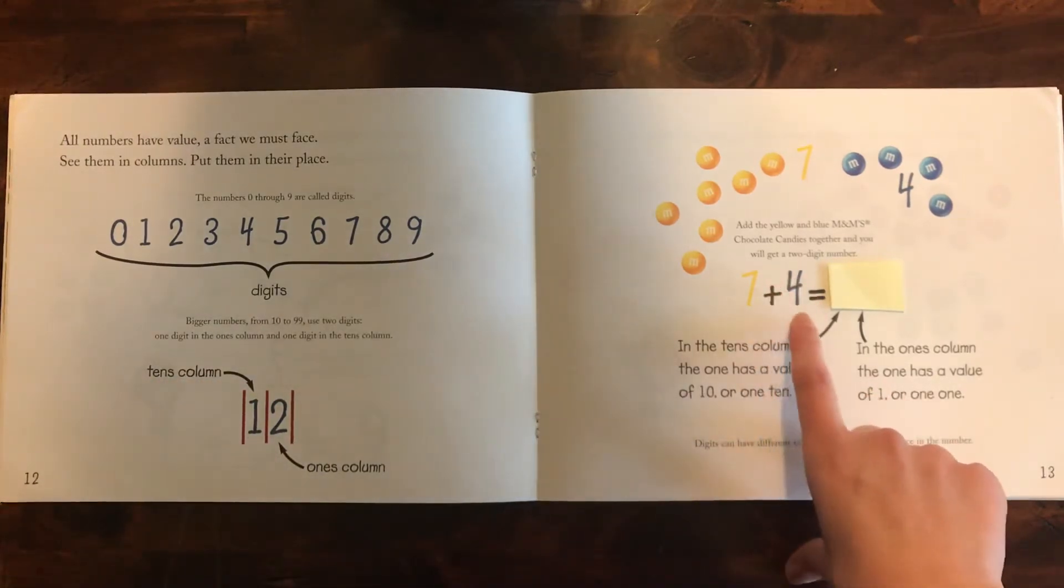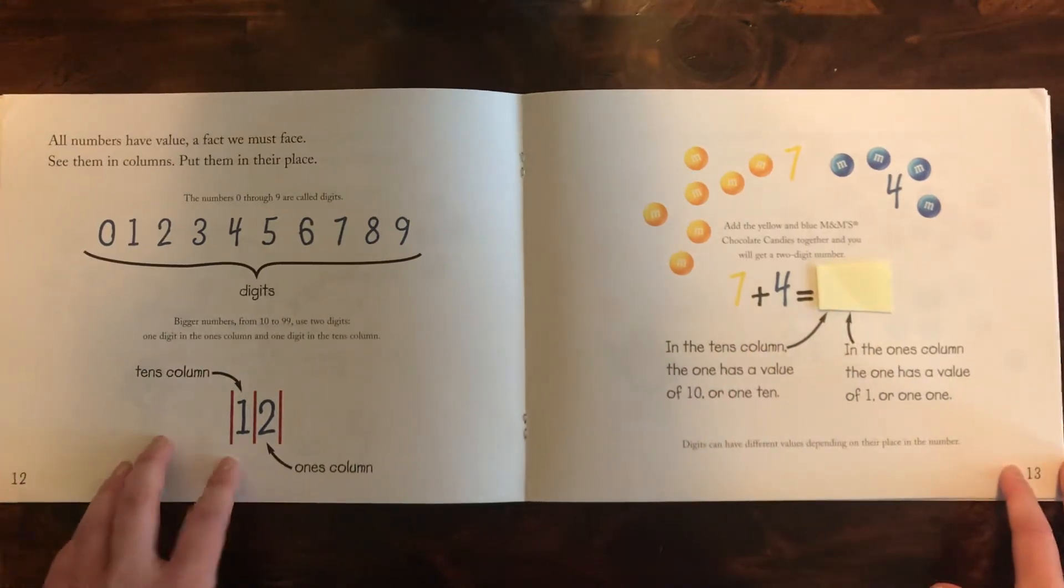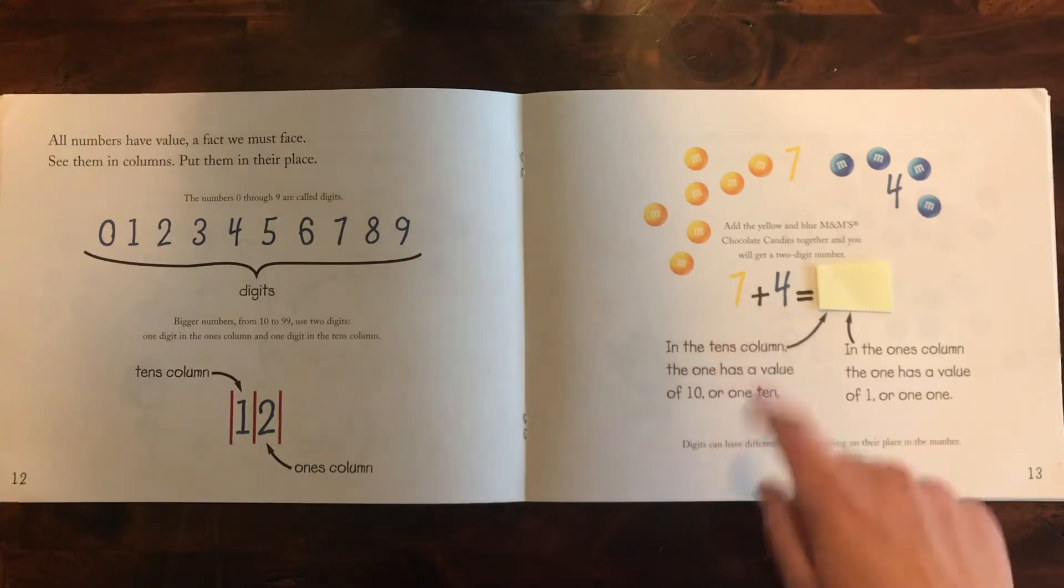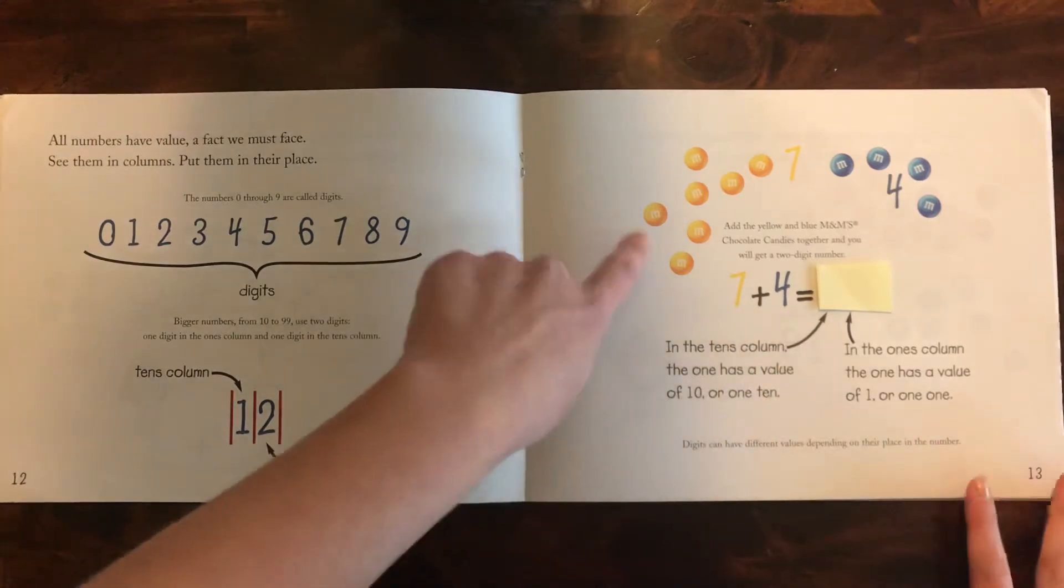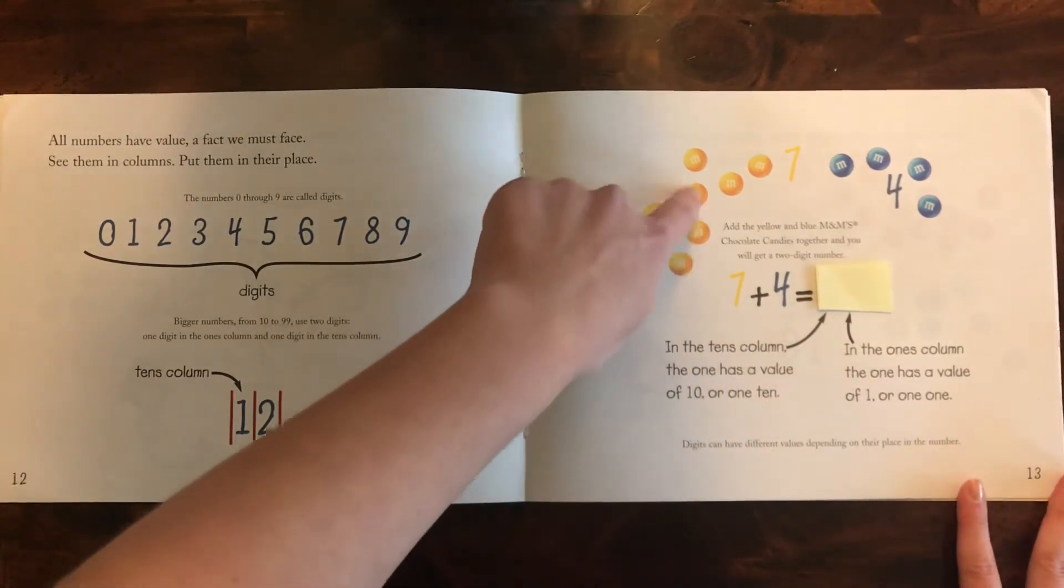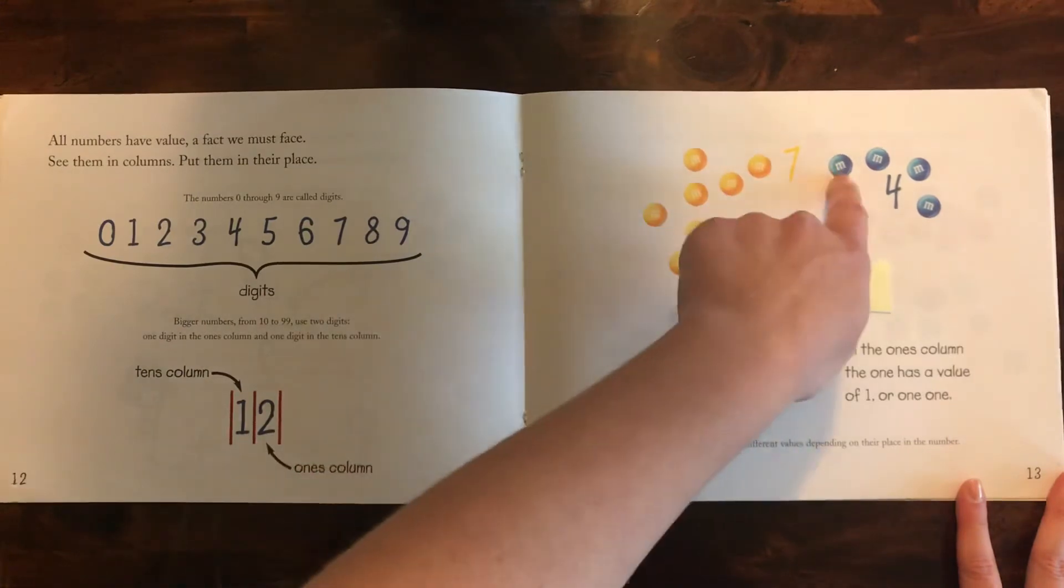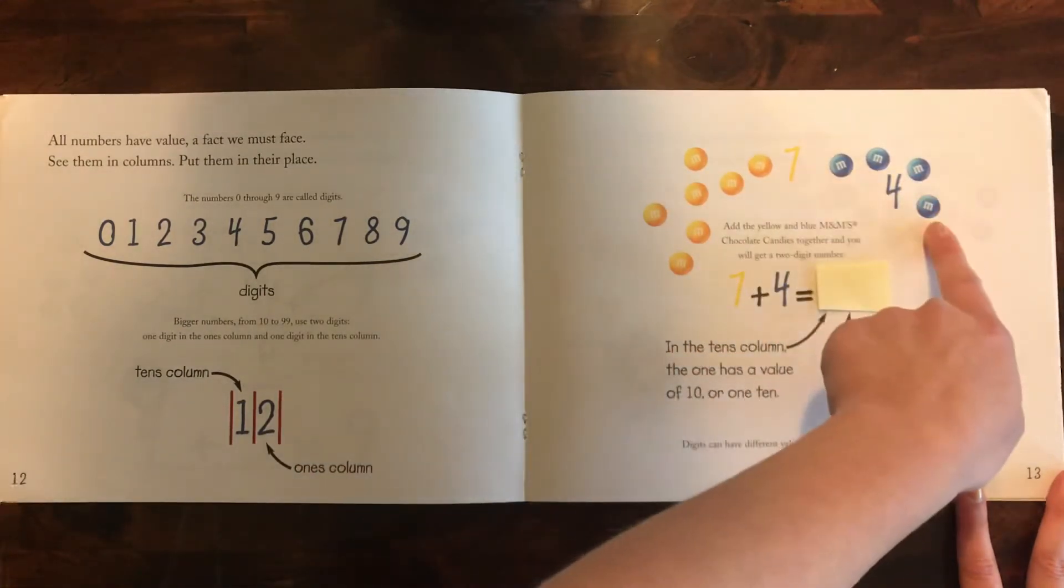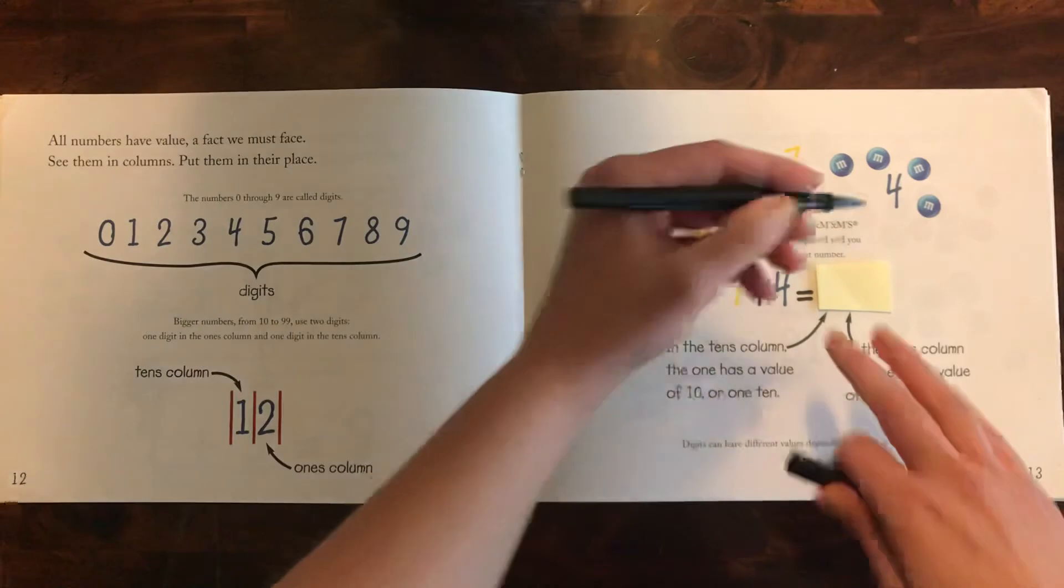Add the yellow and blue M&Ms and you will get a two digit number. So let's look over here. They want seven plus four. Let's count all those M&Ms together. Ready? 1, 2, 3, 4, 5, 6, 7, 8, 9, 10, 11. So we'll write an 11 in there.